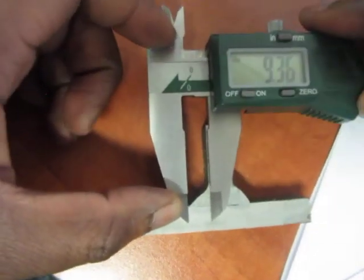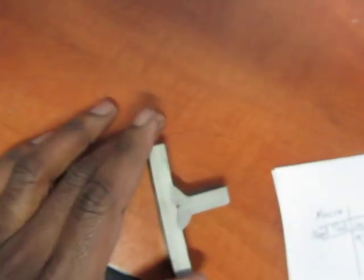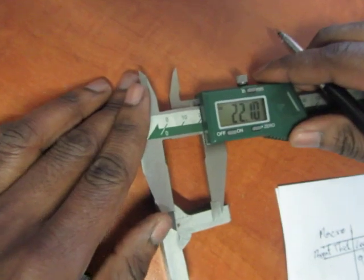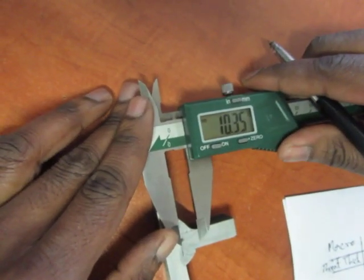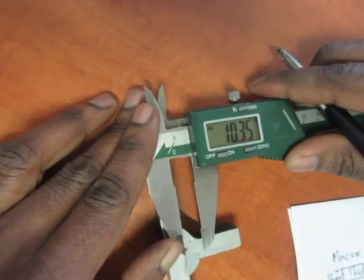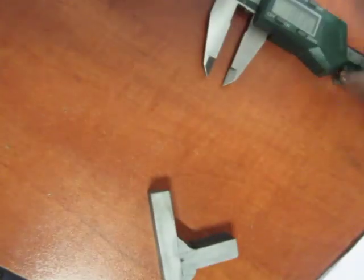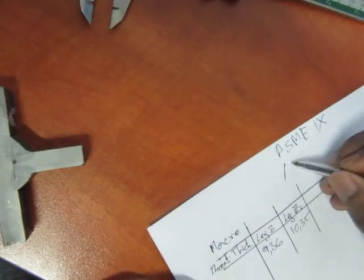Now if I measure the other leg length, let me measure that one. I see it's 10.35 millimeters. So 10.35 millimeters as the Z2, and 9.36 as Z1.